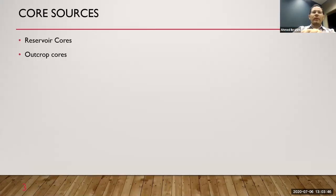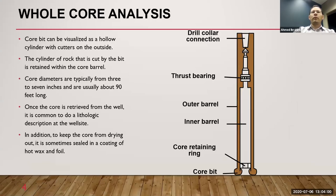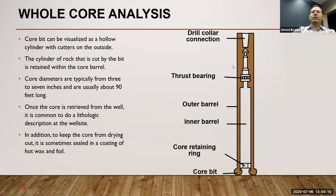The core source — where we can get our cores. There are two types basically: reservoir cores from the actual formation, and outcrop cores. For reservoir cores, there are different techniques we can use to get them — basically going to the formation and using a drill bit to get cores.